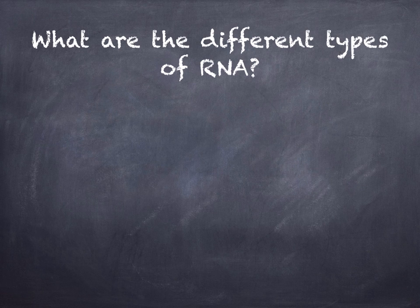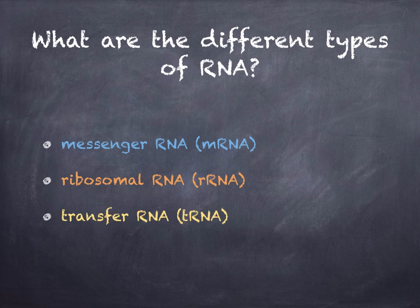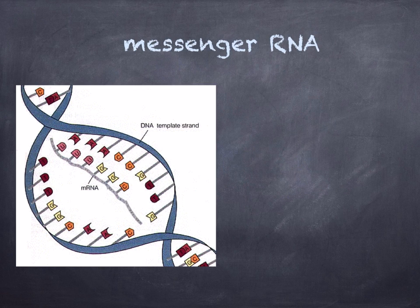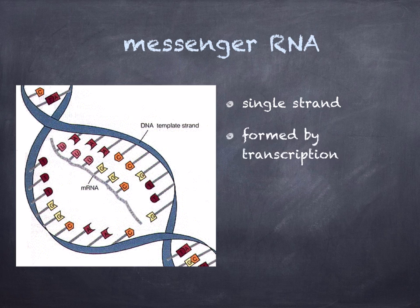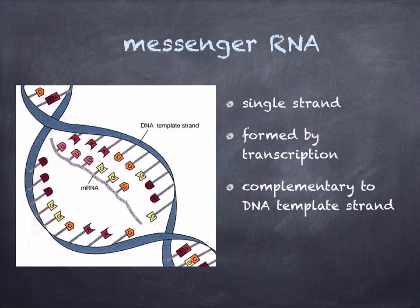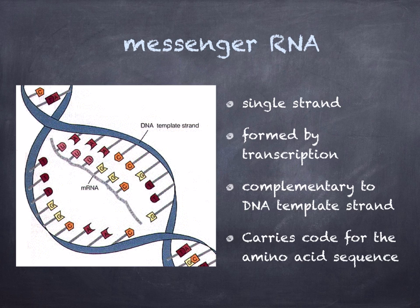There are three different types of RNA: messenger RNA, ribosomal RNA, and transfer RNA. Messenger RNA consists of thousands of mononucleotides forming a long single strand. It is formed by transcription of a section of DNA — the mRNA is being transcribed using an enzyme called RNA polymerase. The mRNA is complementary to the DNA template strand and carries the code for the amino acid sequence.